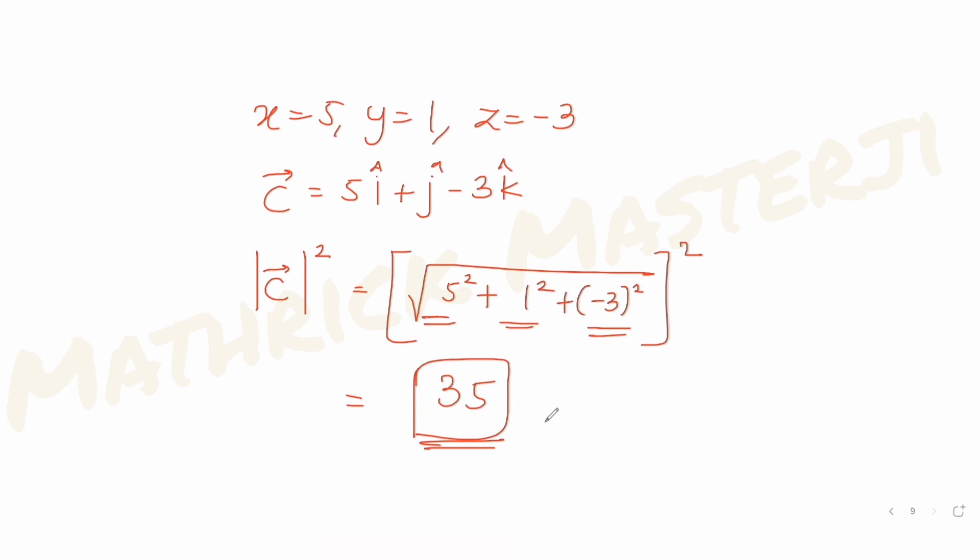I hope you understood how to solve this type of question — you need knowledge of dot product and cross product, set up three equations in x, y, z, solve them, and find the magnitude of vector c squared. I'll see you tomorrow with another question from our JEE Mains series. Please like, subscribe, and share the videos with friends preparing for JEE.